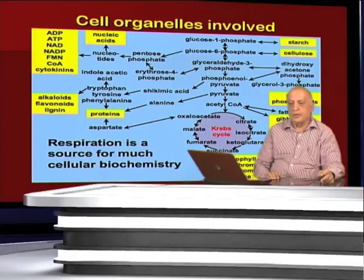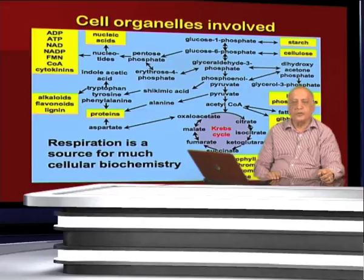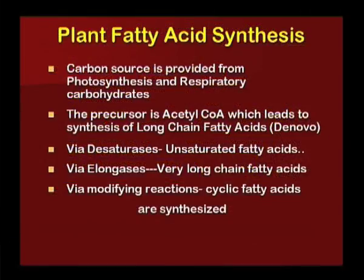In fat metabolism, the cell organelles are involved in a continuous metabolic system in which respiration provides basic metabolic energy in the form of ATP, and photosynthesis in the chloroplasts provides the precursor or initial material for fat synthesis. Plant fatty acid synthesis begins with a carbon source provided from photosynthesis and respiratory carbohydrate. The precursor is acetyl coenzyme A, which leads to synthesis of long-chain fatty acids. Enzymes involved include desaturases and elongases, which form very long chain fatty acids, and via modifying reactions, cyclic fatty acids are synthesized.